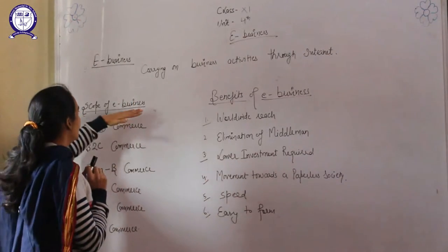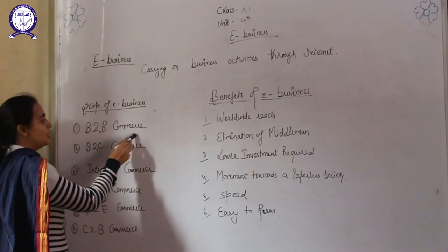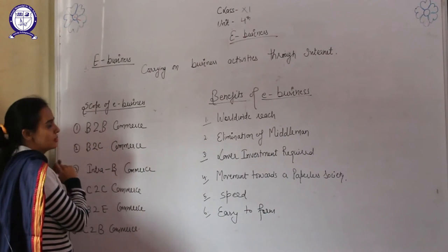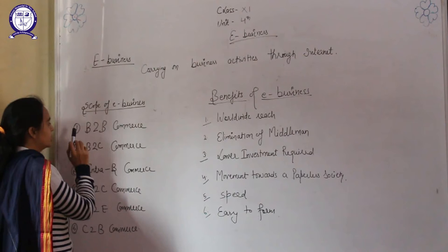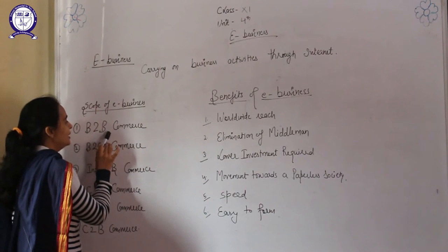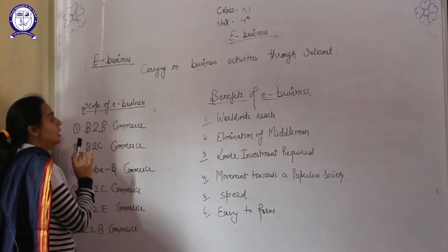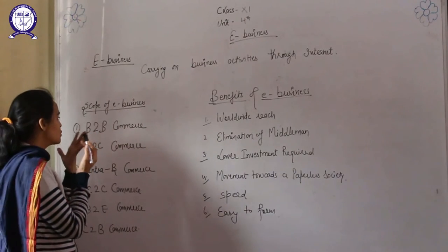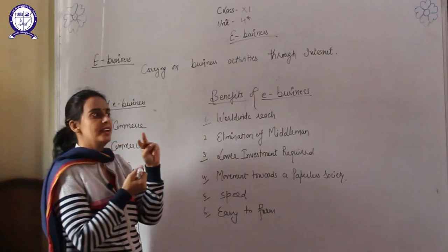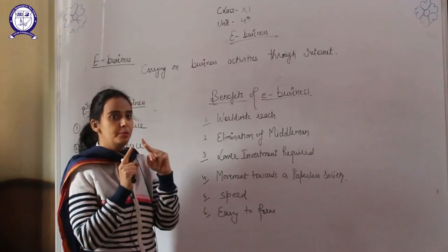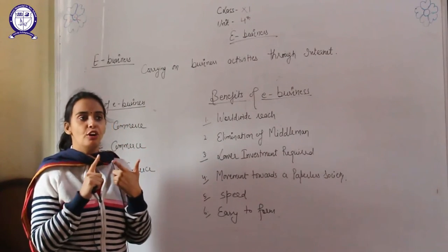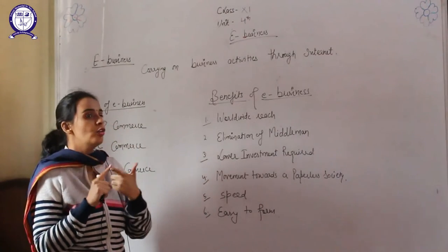Now, the scope of e-business includes B2B, B2C, and consumer commerce. 'B' stands for business, 'C' stands for customer or consumer. The first is B2B — that means business-to-business commerce. Business-to-business commerce means two enterprises or two business firms are involved.